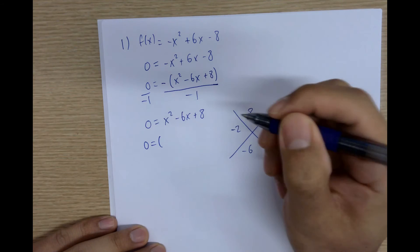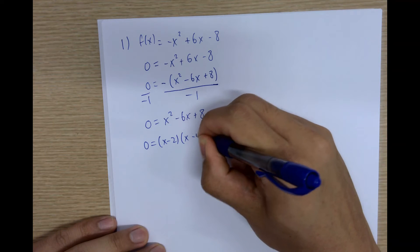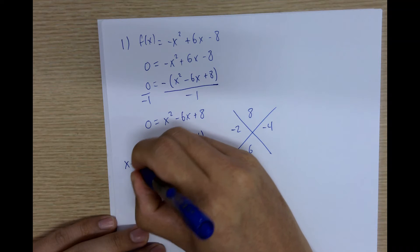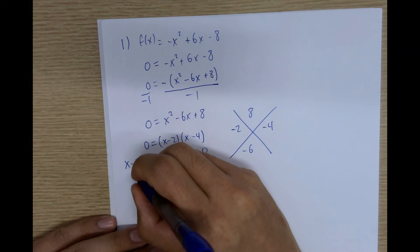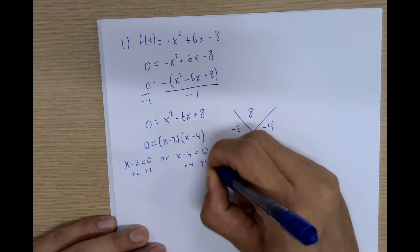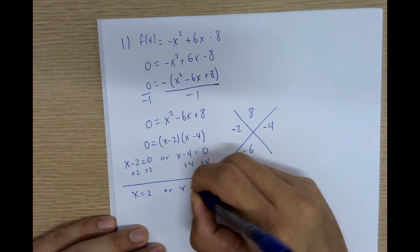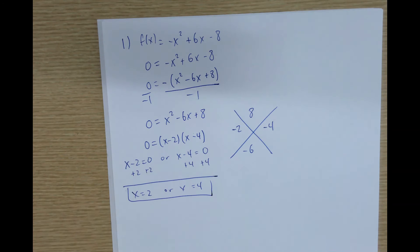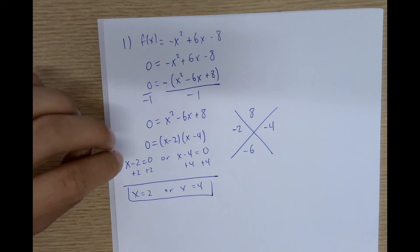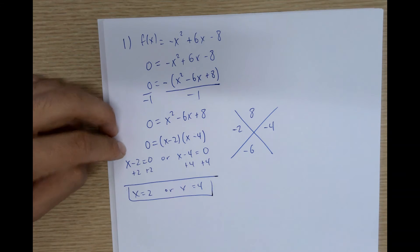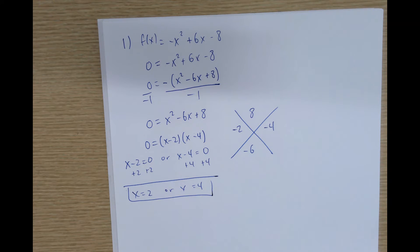We rewrite this as x minus 2 times x minus 4, set both factors equal to 0 by the zero product rule, and solve. So the main difference is: if there's a negative in front of x squared, factor out the negative first, divide both sides by negative 1, and then solve normally.